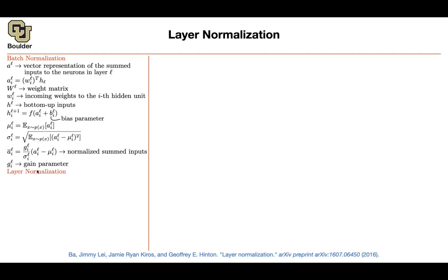What is layer normalization, and what is the problem with batch normalization? If the batch size is very small — which it sometimes has to be when working with videos or large language models like transformers — they consume a lot of memory, so you're forced to use small batch sizes to fit on your GPU. Otherwise you get memory errors. If the batch is small, these statistics are really bad. So it would be good to have a normalization framework that doesn't depend on batch size and can work with batch sizes of one.